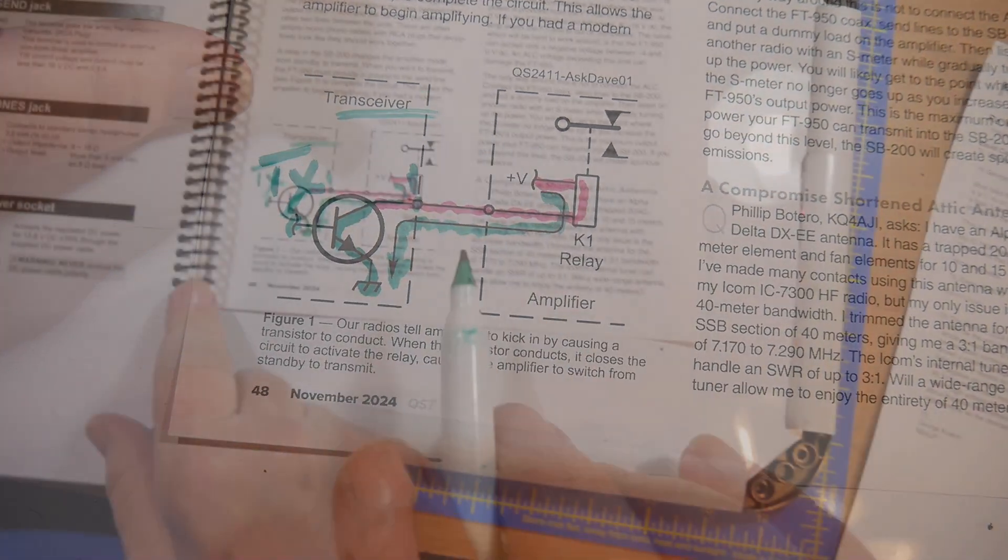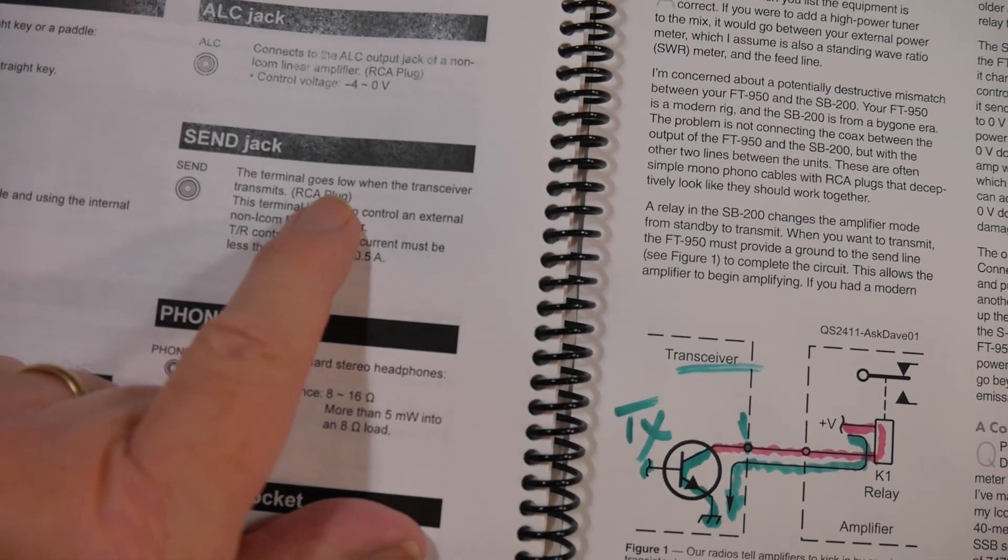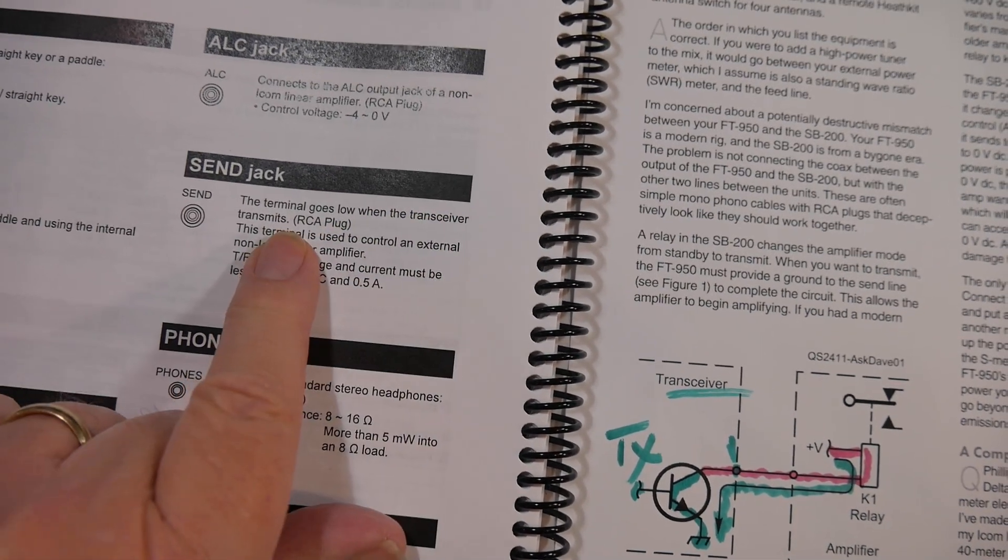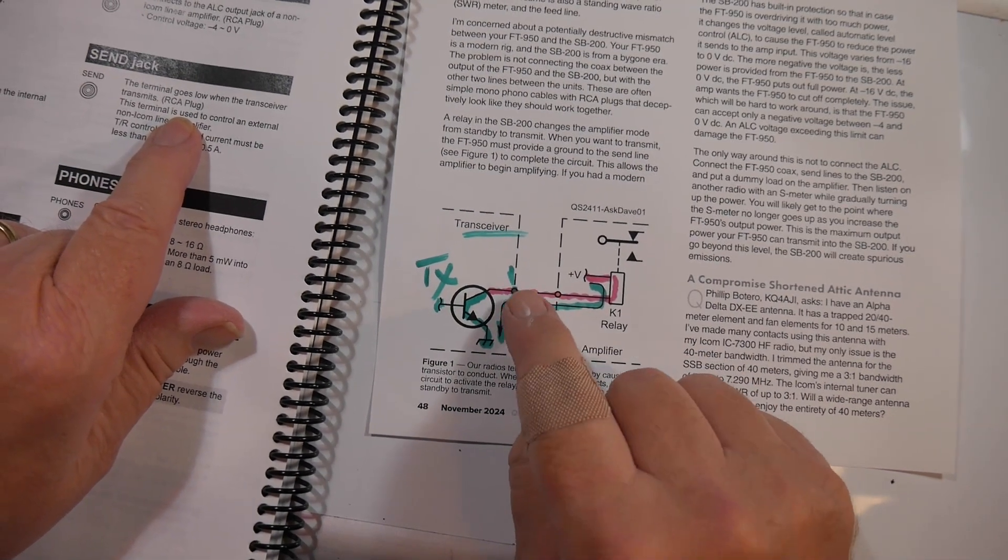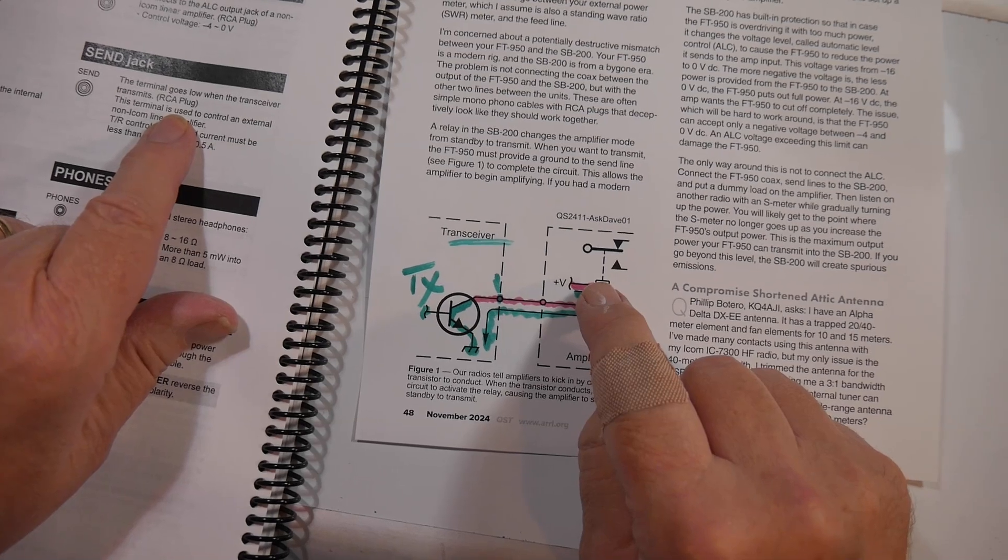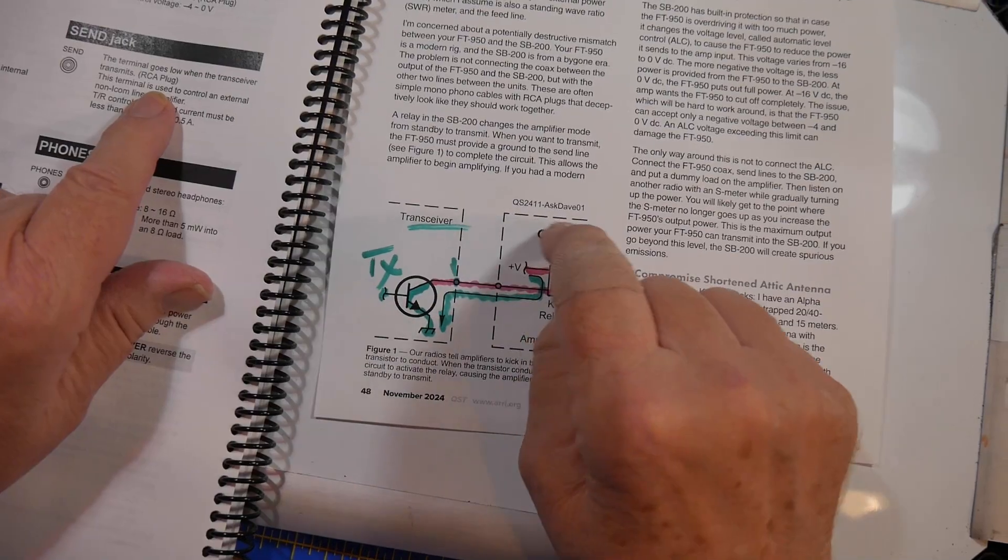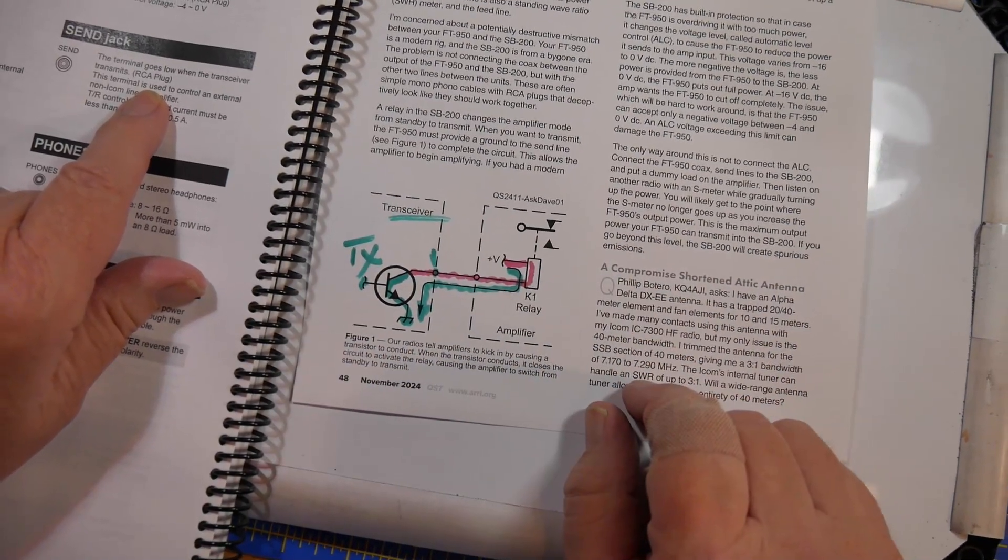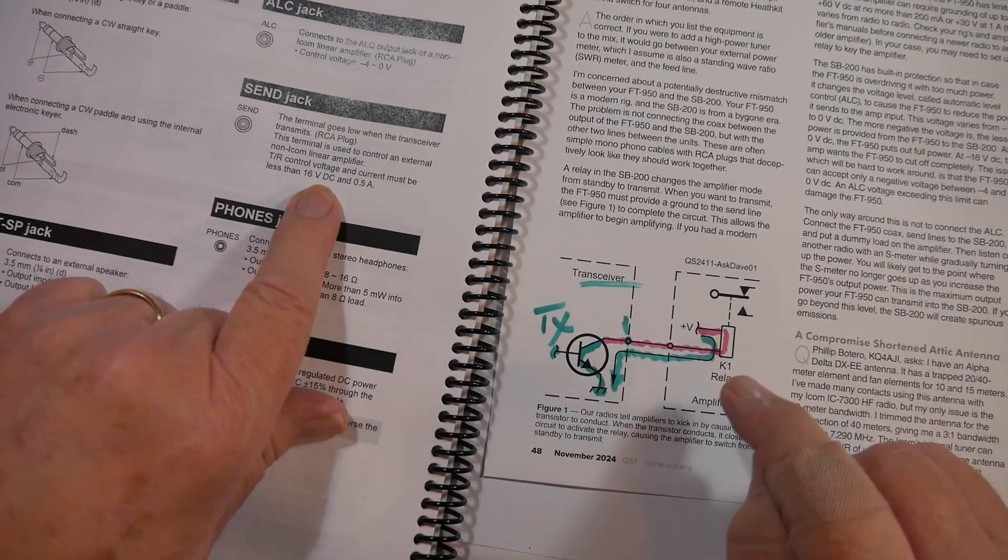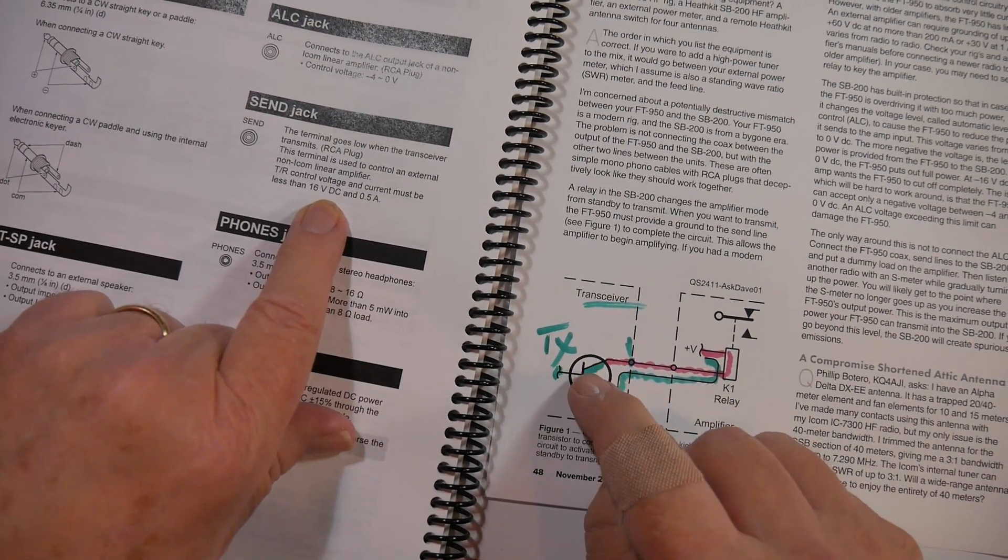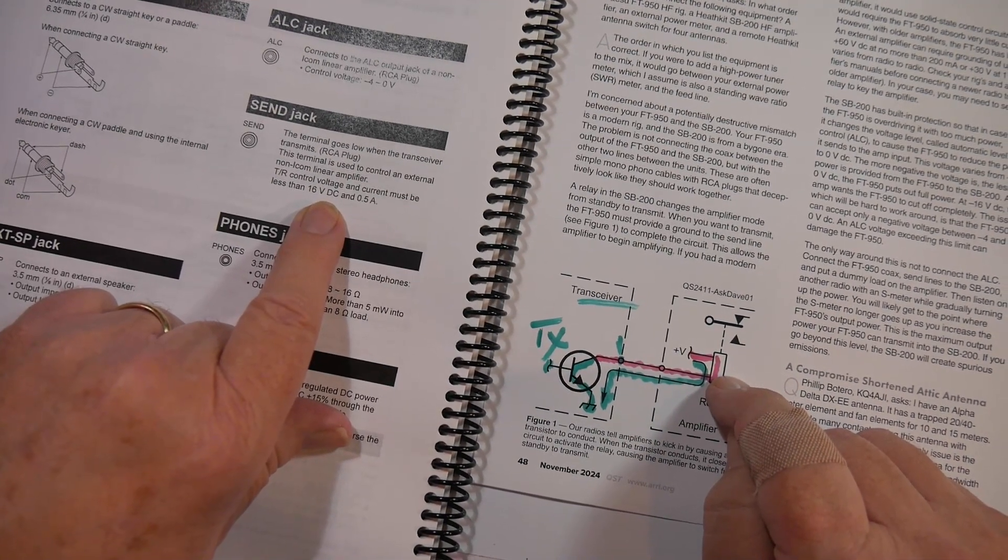Now when it becomes a Logic 0, what makes it a Logic 0 is that this transistor is energized with a positive pulse. The current comes down here, through here to ground, thus closing the relay circuit. All radios are like this. This is called the send jack. It's an RCA plug. The terminal goes low when the transceiver transmits.